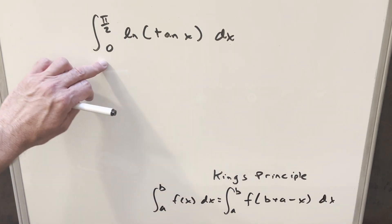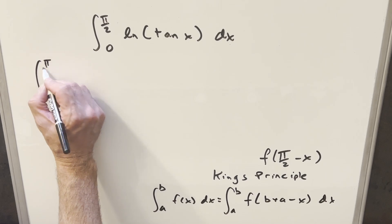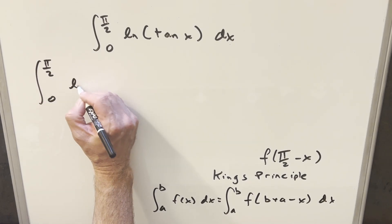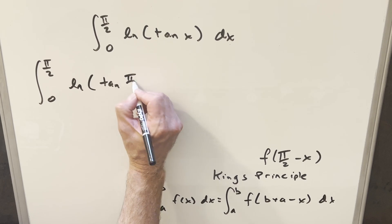So in our case here, what we're going to do is add the bounds together, and we're going to be looking at f of pi over 2 minus x here. So we'll go ahead with this. Our bounds will stay the same. We're going from 0 to pi over 2, and then we'll have just natural log of tan pi over 2 minus x.